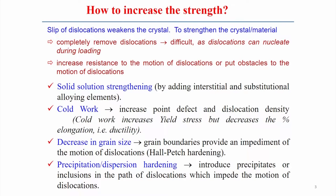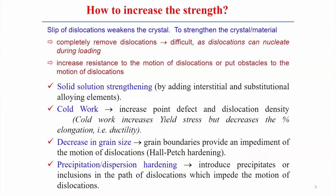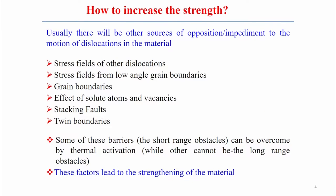The fourth mechanism is precipitation or dispersion hardening. By introducing precipitates or inclusions in the path of dislocation motion, the motion of the dislocation is impeded. In all these cases, the obstacles to dislocation movement are what allow us to increase the strength level of a single crystal structure.